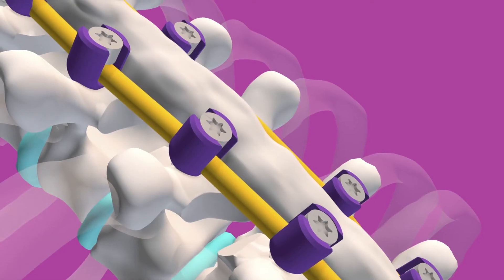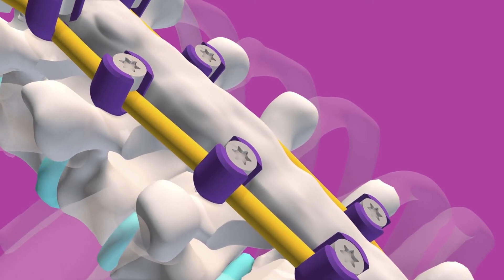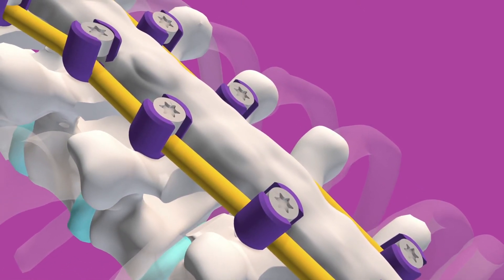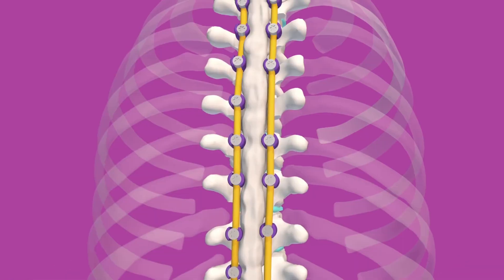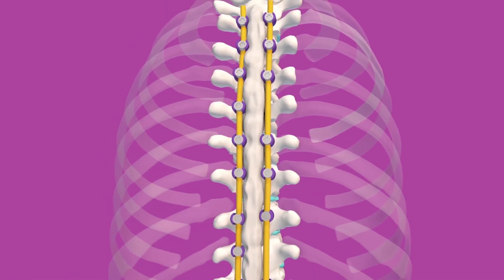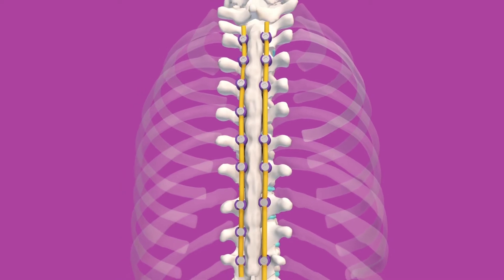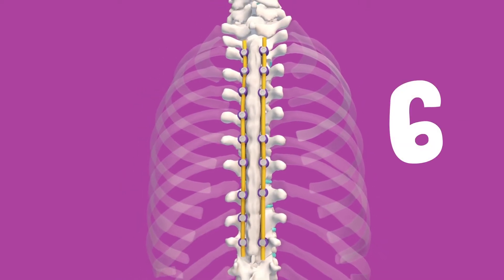With time, the bone graft fuses or grows together with the existing bone and forms a solid column of bone in that area. The implants hold the spine in the corrected position while the bones are fusing. This generally takes 6 to 12 months.